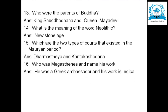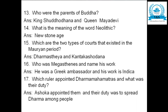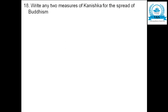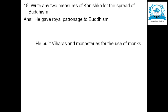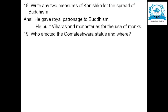Who was Megasthenes and name his work? He was a Greek ambassador and his work is Indica. Which ruler appointed Dharma Mahamatras and what was their duty? Ashoka appointed them and their duty was to spread Dharma among the people. Write any two measures of Kanishka for the spread of Buddhism — he gave royal patronage to Buddhism and he also built viharas and monasteries for the use of monks.